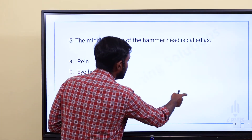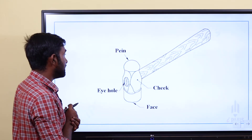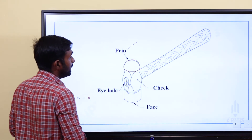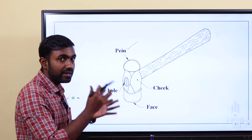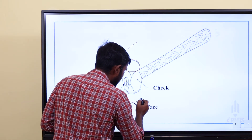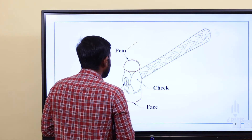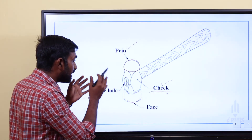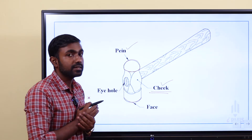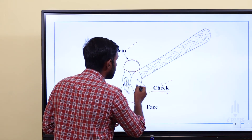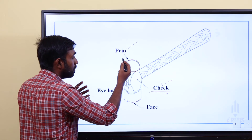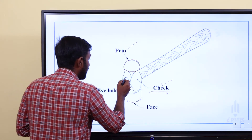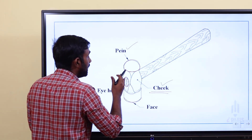Looking at the hammer head parts: the top portion is the ball or peen shape used to shape pins. The face is the striking surface at the bottom. In between the peen and face, the middle part is called the cheek. The eye hole is the tapered hole where the handle is fixed. The face and cheek are hardened areas. So the middle portion of the hammer head is called the cheek.